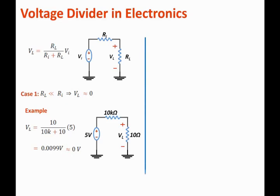The second case is when RL is much, much, much bigger than Ri — so the load resistance is much bigger than the input resistance. Then the load voltage is approximately equal to VI. We can assume that the voltage across RL is approximately equal to VI.